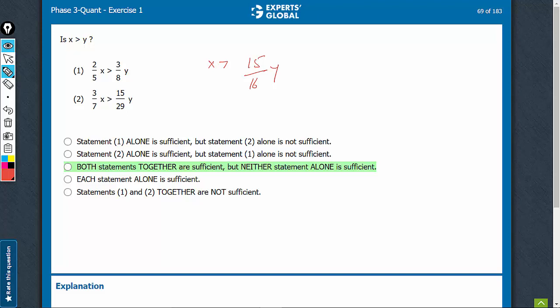Now imagine if x is equal to something like say 95 and y is equal to 100. You will find that 95 is greater than 15 upon 16 times 100, because 15 upon 16 is 0.9375. Originally y was greater than x, but on being multiplied by 15 upon 16, it became smaller.